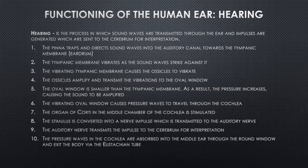As the eardrum vibrates, it transmits those vibrations to the ossicles — the hammer, anvil, and stirrup. As these ossicles vibrate, they amplify the sound. They then transmit the vibrations to the oval window. Because the oval window is smaller in size than the eardrum, the pressure is increased even further, causing the sounds to be amplified even more.